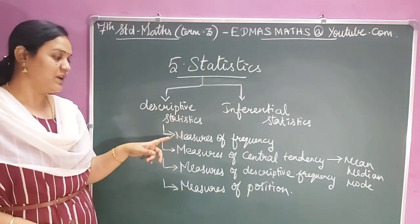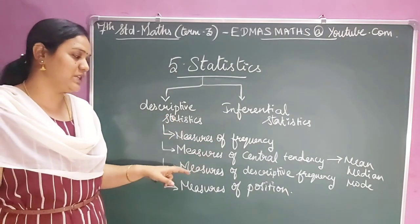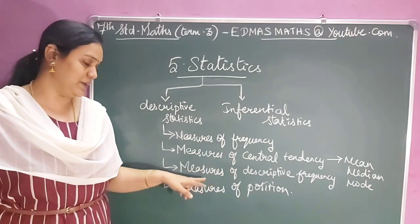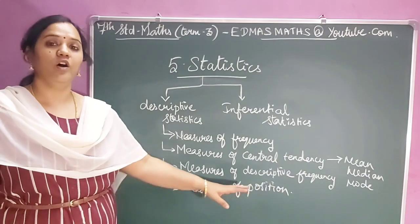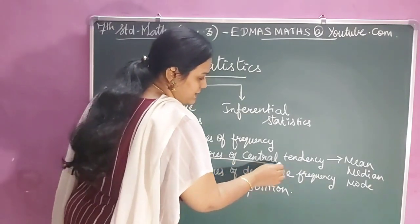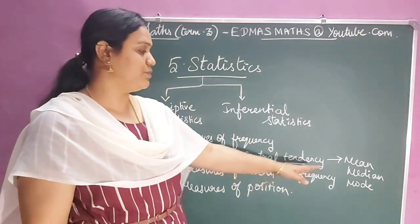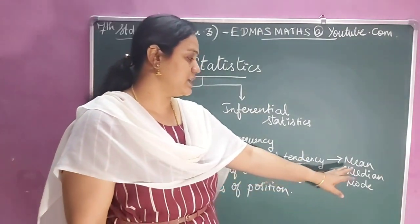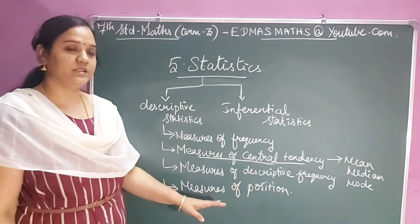There are two types of statistics: descriptive statistics and inferential statistics. In descriptive statistics, we have four types: measures of frequency, measures of central tendency, measures of descriptive frequency, and measures of position. In this, measures of central tendency is further classified as mean, median, and mode.